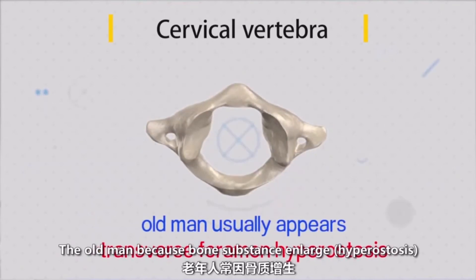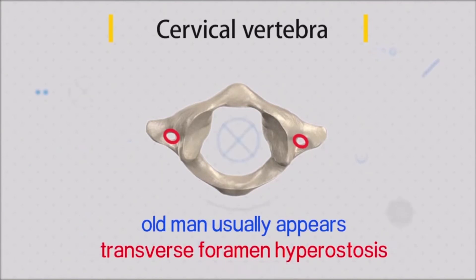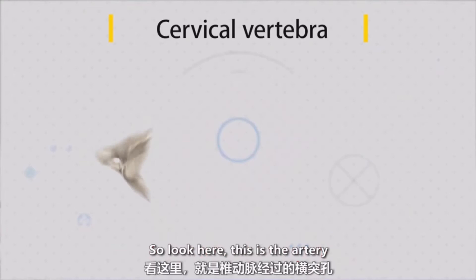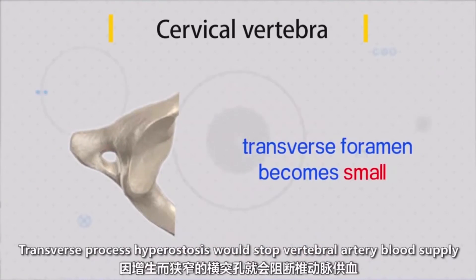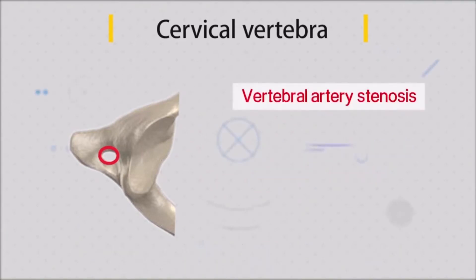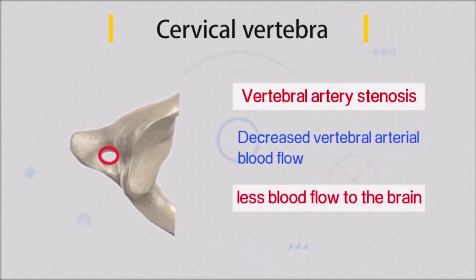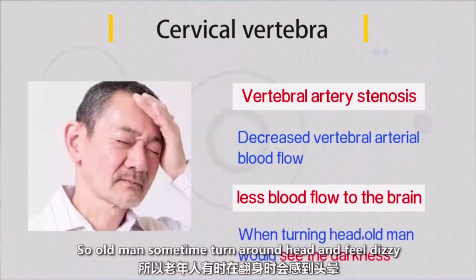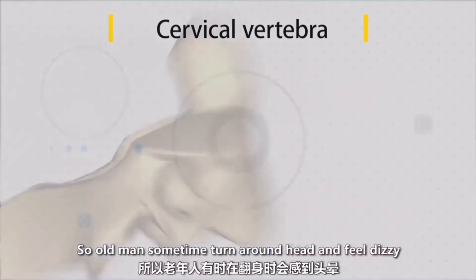In older men, because bony substance would be enlarged there, for example — this is the artery, and the bony substance, when enlarged, would press the artery and stop the blood supply. So in older men, sometimes when they turn their head around, they suddenly feel darkness. So this is number two.